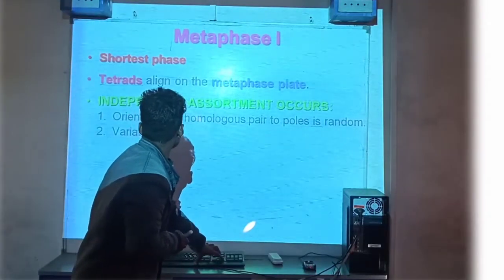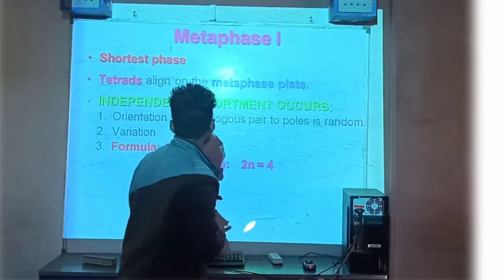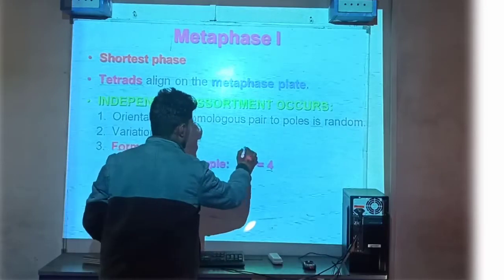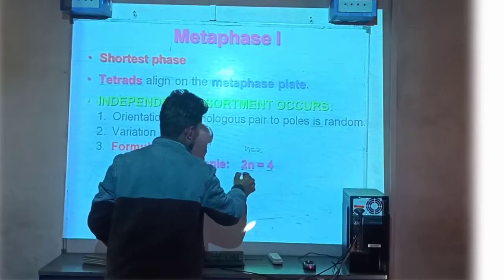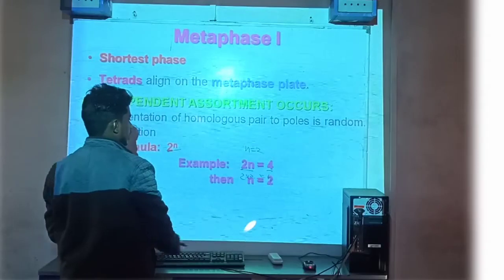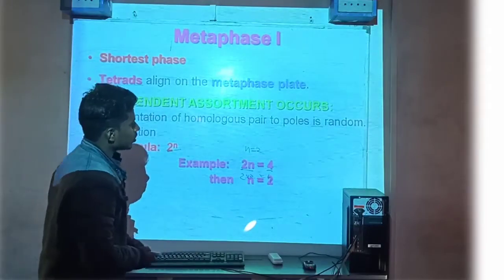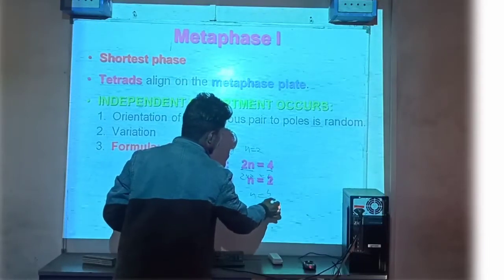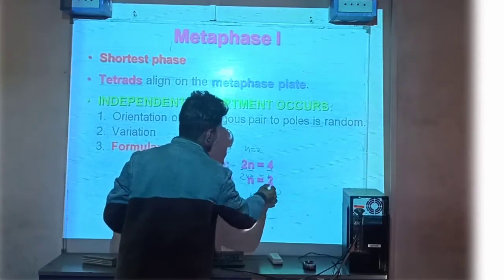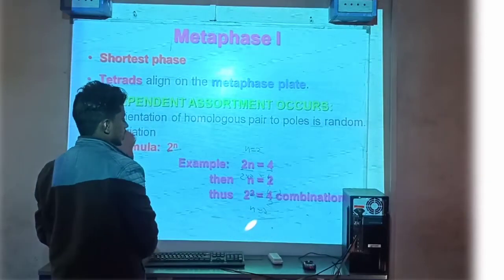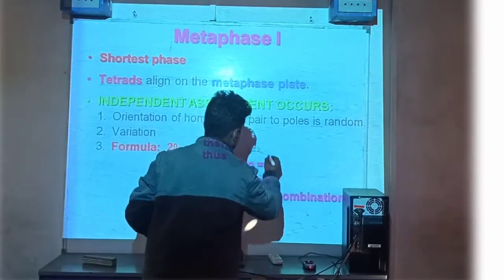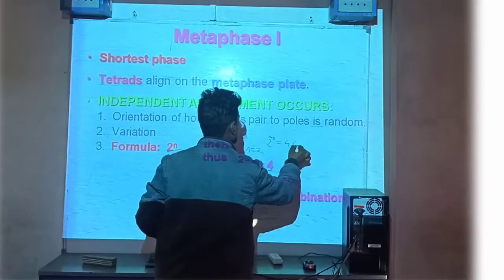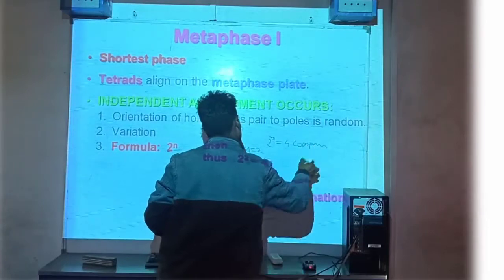Next, variation का formula देखते हैं: that is 2^n. Example: 2n is equal to four, जिसमें n की value two है। इस basis पर 2 multiplied 2 is equal to 4 — यह आ गया। जब 2n = 4 है, तो n = 4/2 = 2। Thus 2^n = 2^2 = 4 combinations — तो 2 का square is nothing but 4 combinations।